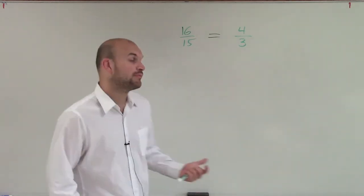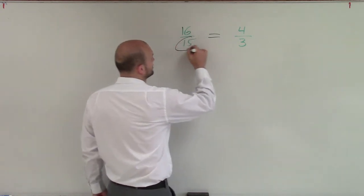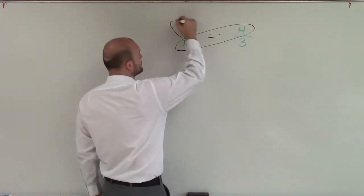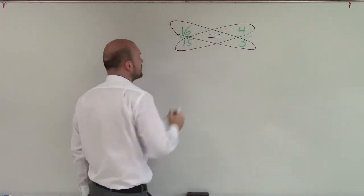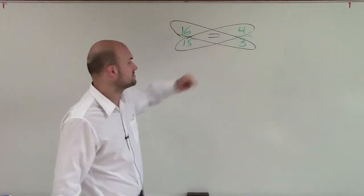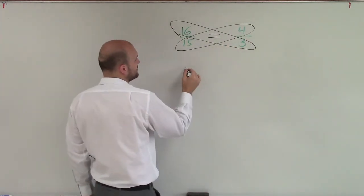Another thing that we work on when dealing with proportions is cross multiplication. So if I was going to apply cross multiplication, remember, cross multiplication still includes this equal sign, but what I do is I multiply across. So therefore, I'd have 60 equal to 48.